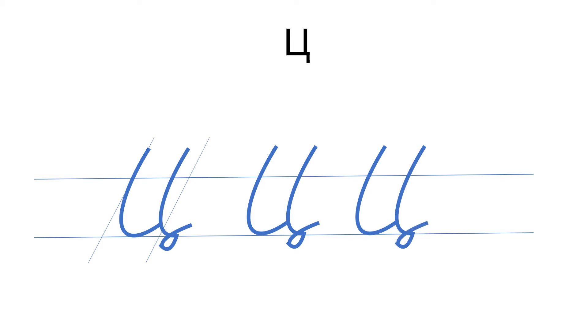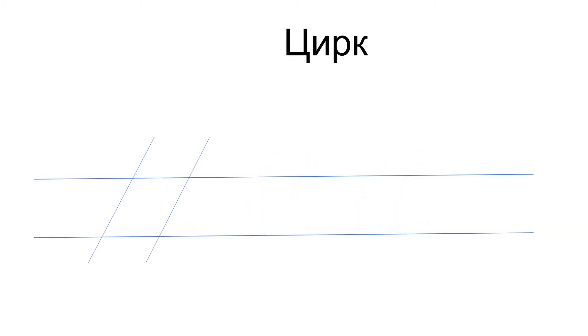Pause my video, practice this capital C letter, and then come back. I couldn't find any truly Russian name starting with C, so I picked the word 'cirque' — Russian 'цирк' — which means circus. So we start with capital C.